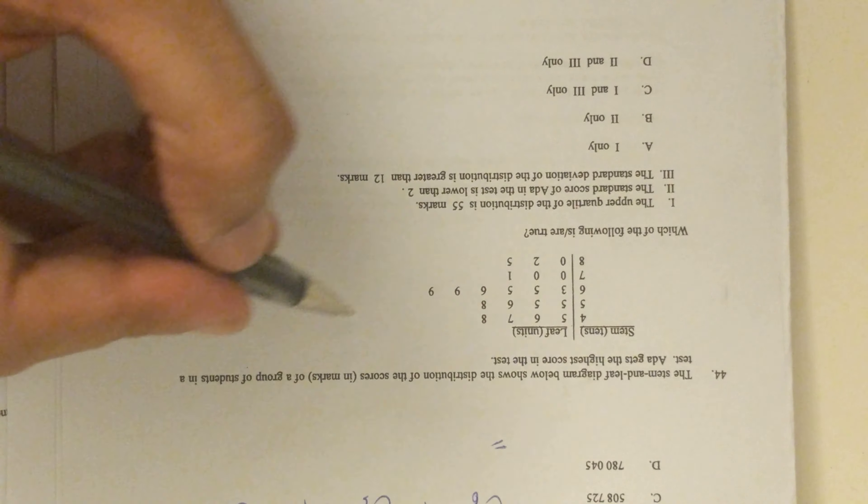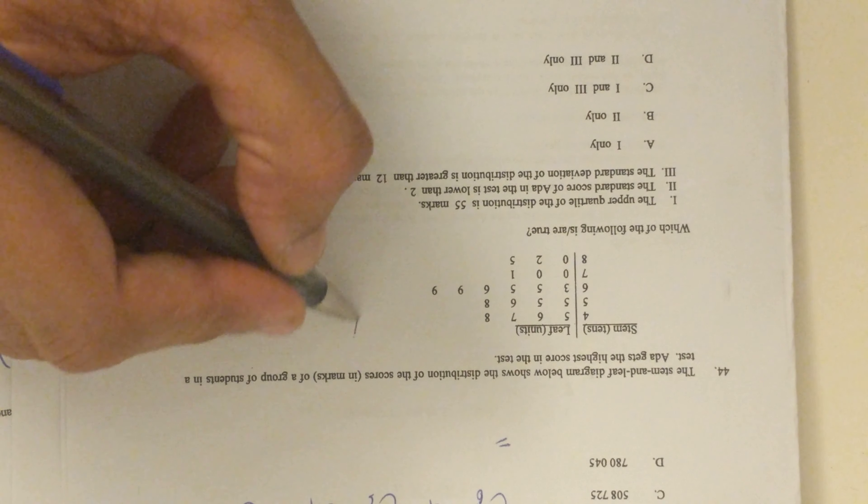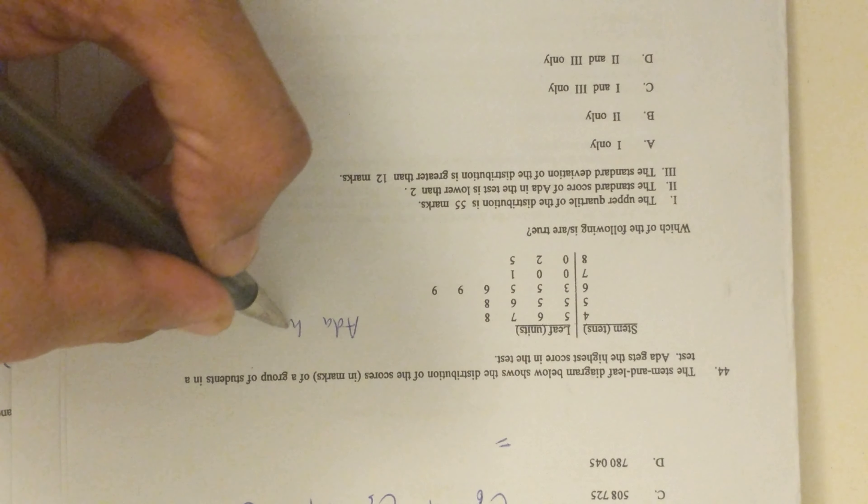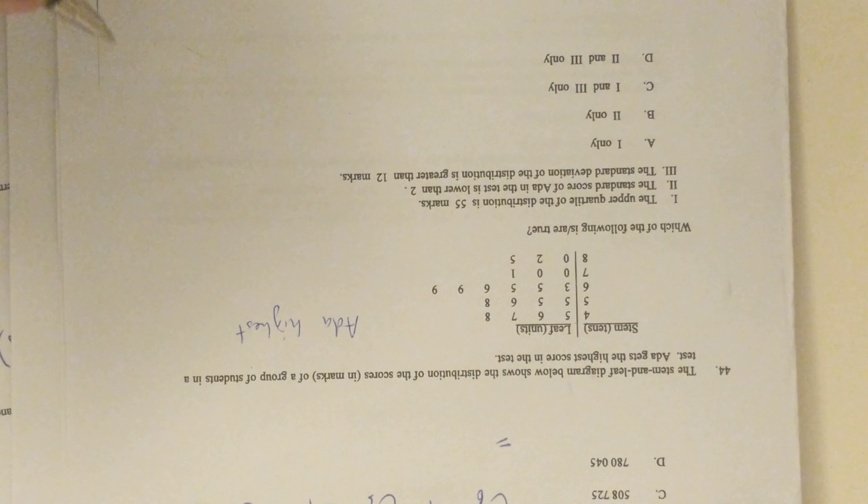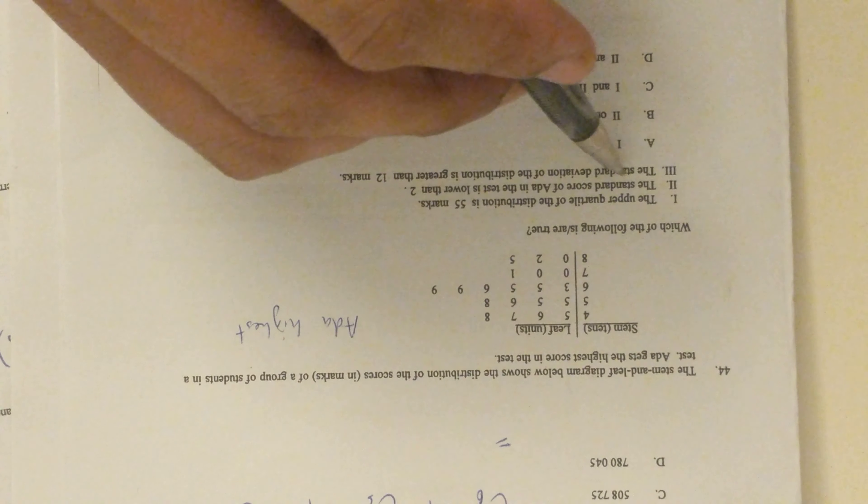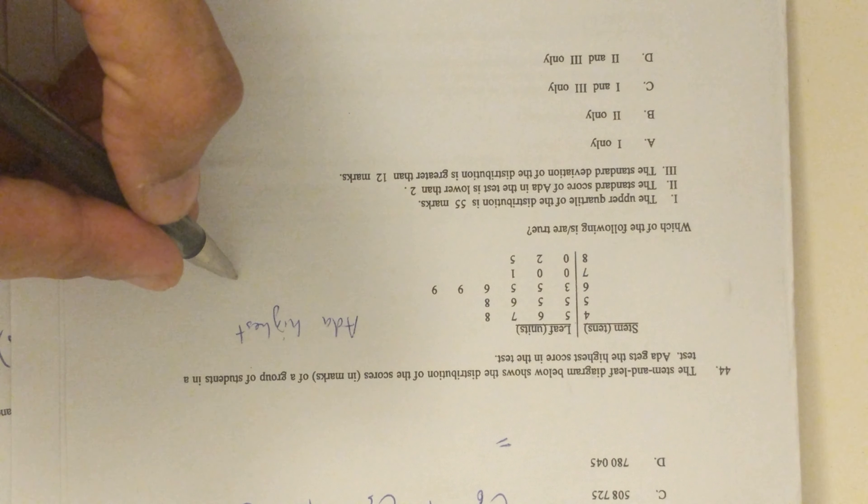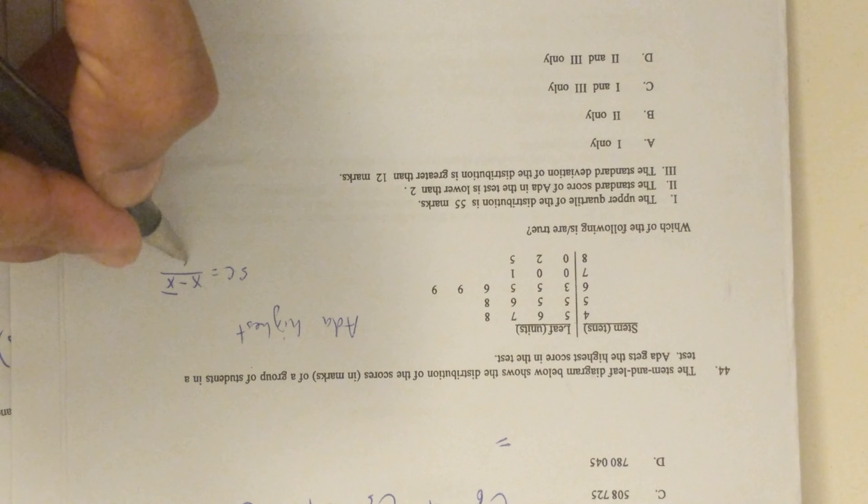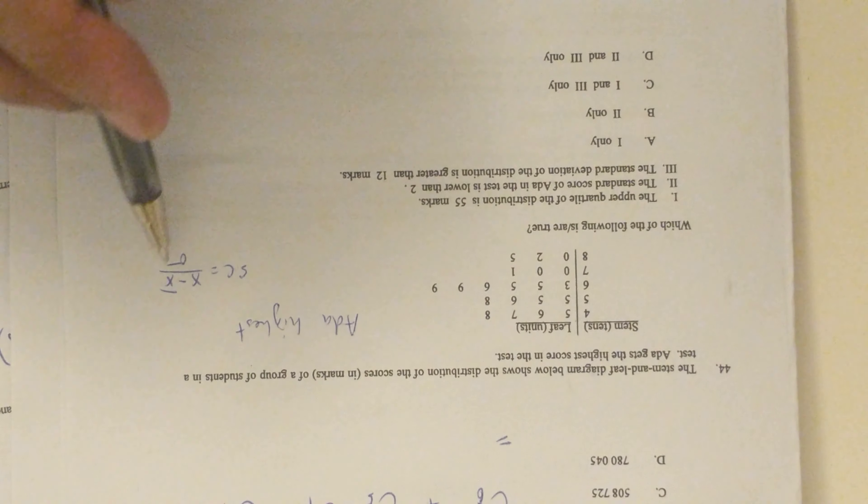Because Ada has the highest score, they are asking for the standard score. You will need to remember the standard score formula. Since Ada has got the highest score, 85 is her score - so we got the score.